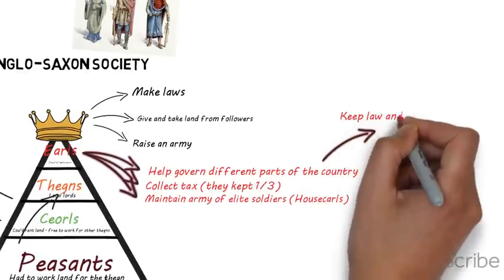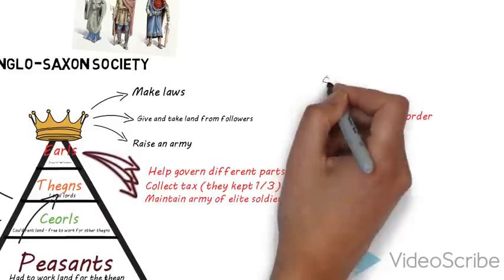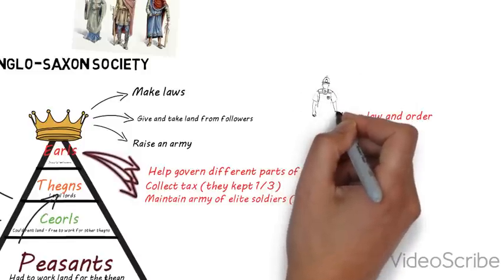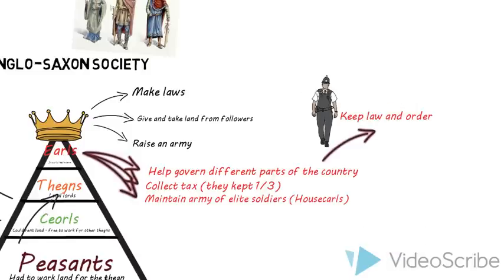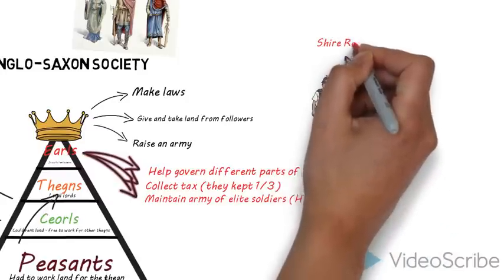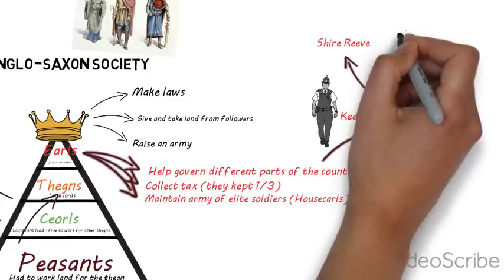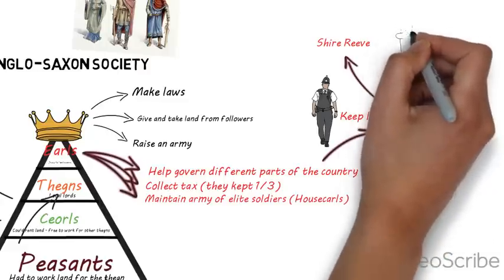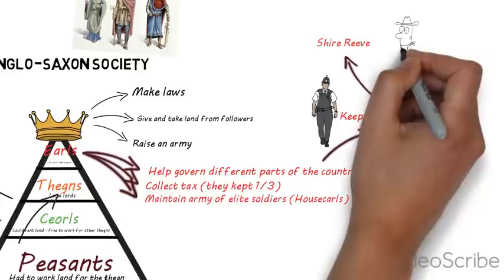It was the earls' responsibility to keep law and order in the parts of the country that they ruled. Their areas — the shires that they ruled — were broken up into different parts, and it was up to the shire reeve to maintain law and order in different parts of the shire. This is, of course, where the word 'sheriff' comes from.